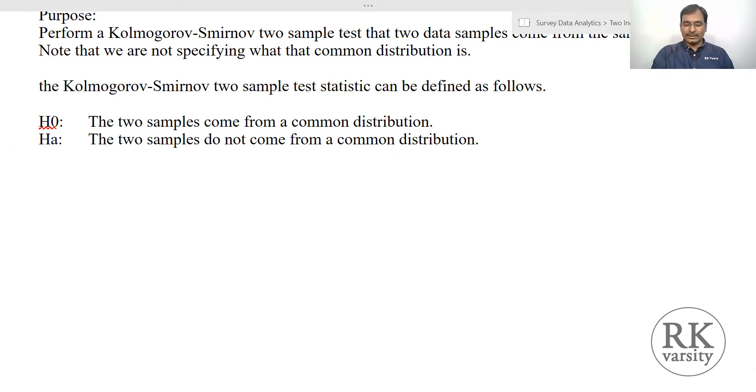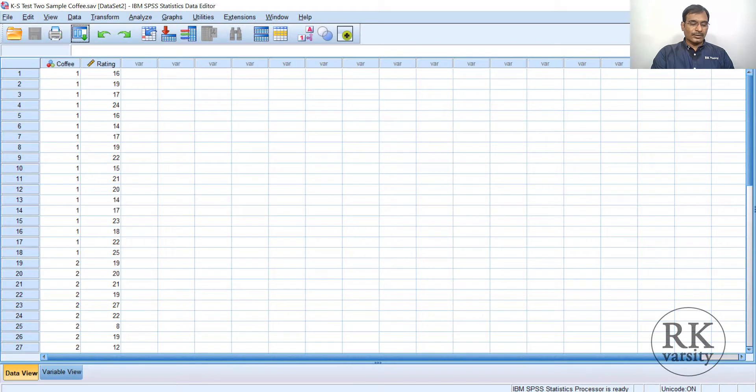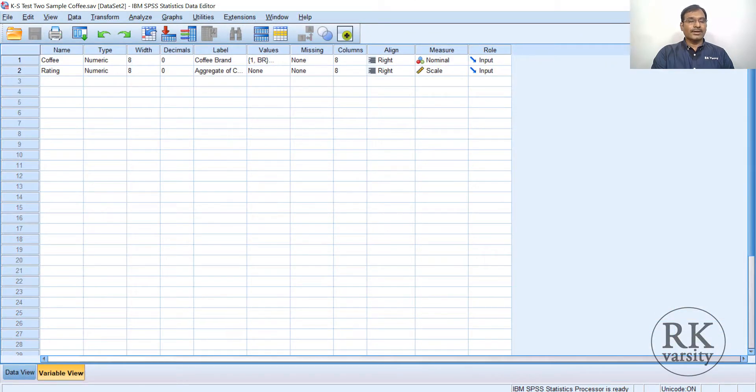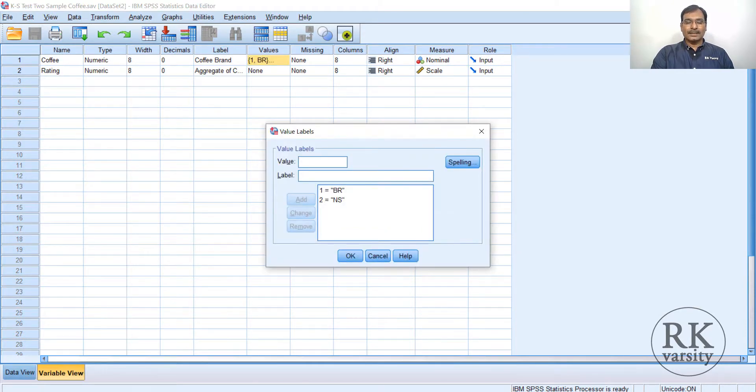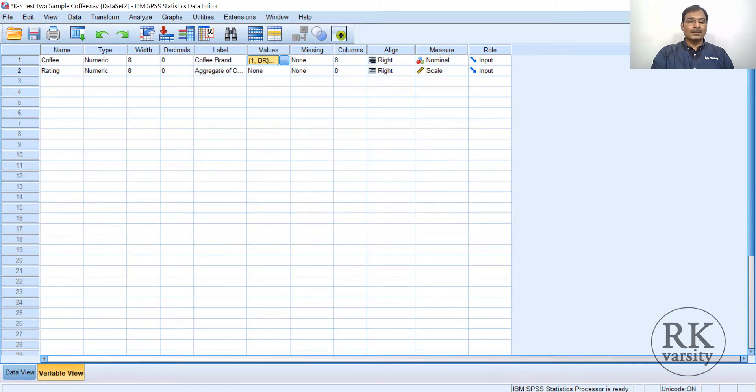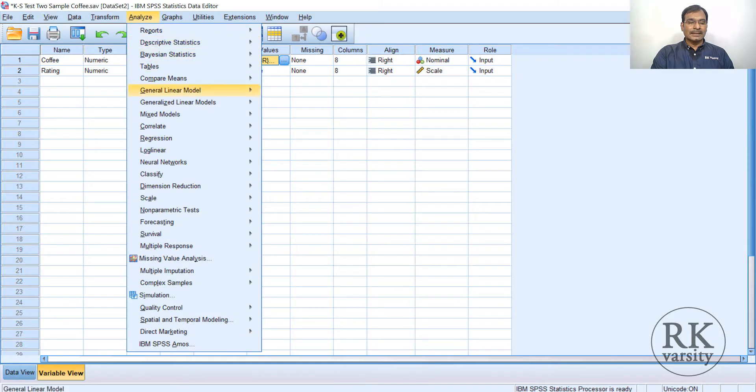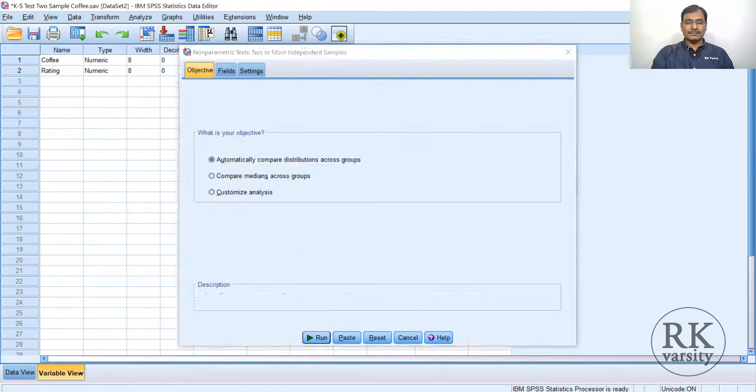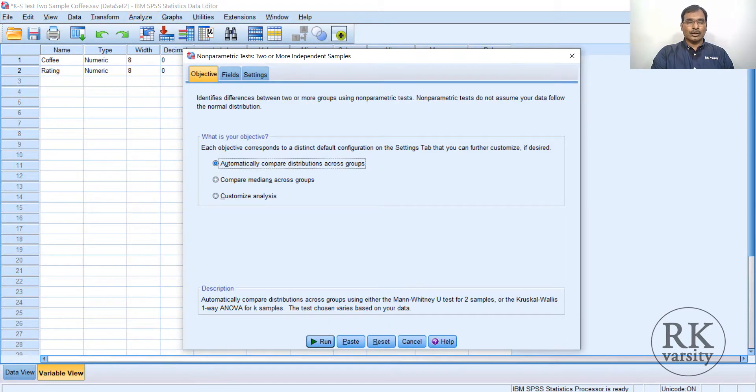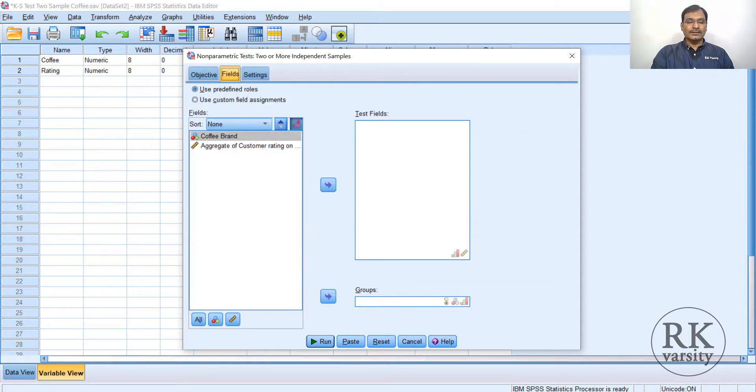Here we have the data sheet. Go to variable view and observe the variables. Coffee is your grouping variable and rating is the test variable. Here 1 is BR and 2 is NS. To run, click on Analyze, then Non-Parametric Tests. This time go to Independent Samples. The independent samples objective is automatically to compare distribution across groups. Click on the Fields button.